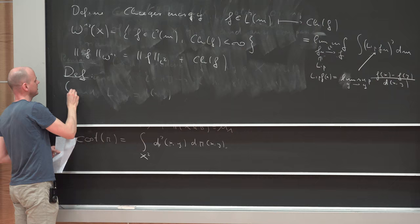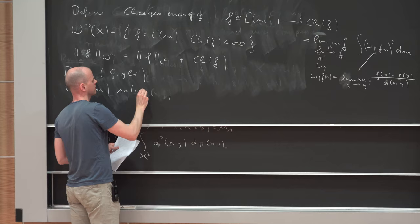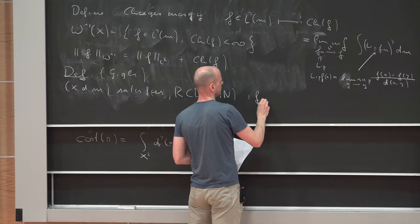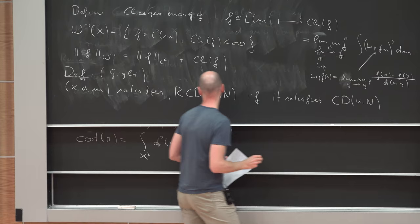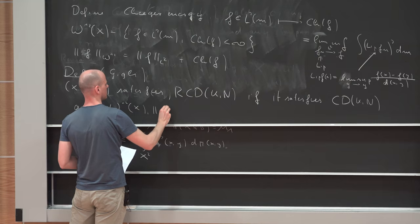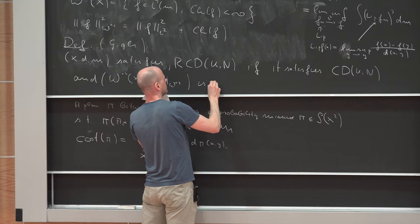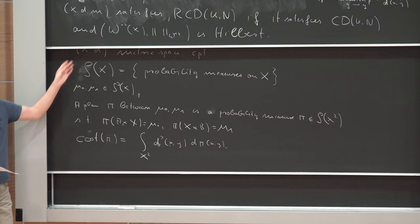To overcome this difficulty, we refine the definition to the so-called Riemannian curvature-dimension condition. For that we define the Cheeger energy, which is a Dirichlet energy for metric measure spaces: it maps L² functions to an energy defined as a liminf over sequences of Lipschitz functions fn converging to f in L², using the local slope. This mimics the construction of Sobolev spaces on Rⁿ. A metric measure space is RCD(K,N) — due to Gigli — if it satisfies CD(K,N) and the Sobolev space W^{1,2} is a Hilbert space.